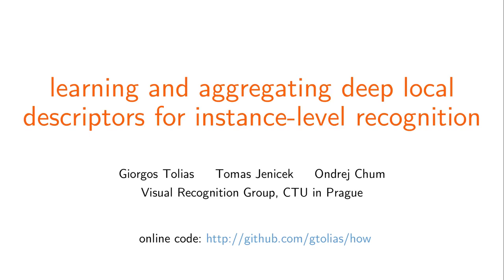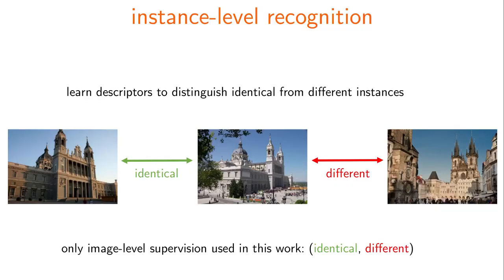In this work we are learning deep local descriptors for instance level recognition. We want to learn descriptors that, along with an appropriate similarity measure, discriminate between identical and different instances. Even though the local descriptors in this work are learned with global supervision, they deliver state-of-the-art performance in instance level recognition.